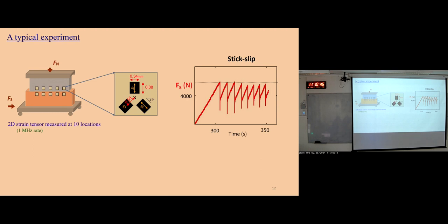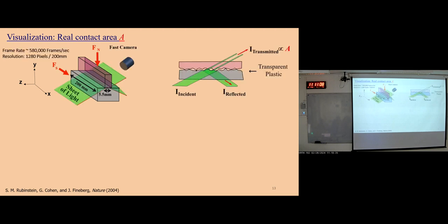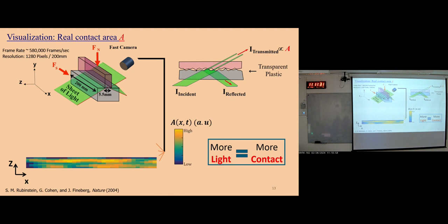Let's focus on the fast process at the onset of sliding events — how this fast sharp drop happens. To visualize the contact area, we need a sheet of light to illuminate it. As mentioned before, the contact points are not homogeneous; the interface is combined with many contact points and non-contact areas. With a specific inclined angle, light will totally reflect at non-contact points but be transmitted at contact points. Using a camera, we can directly capture the transmitted light — more light means more contact.